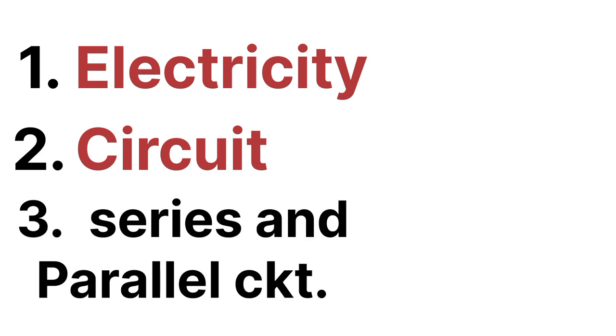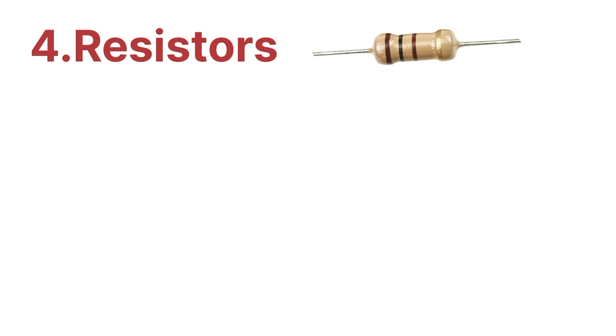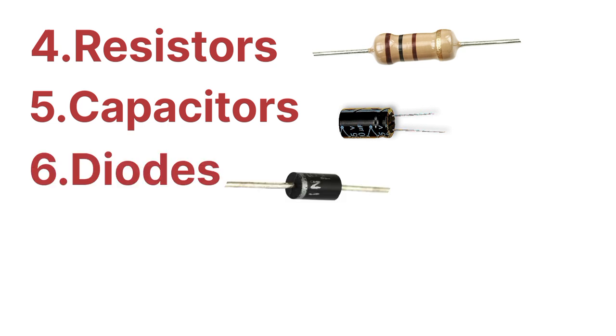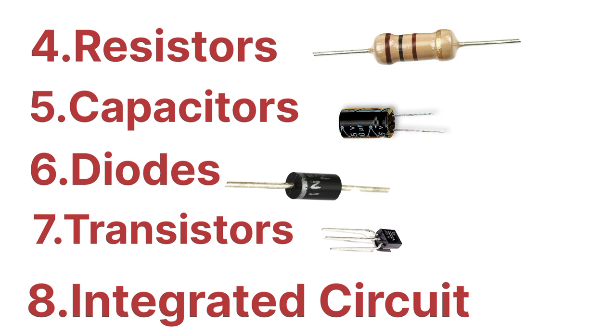The fourth one is resistors, then we'll see capacitors, then diodes and transistors, and the IC (integrated circuit). Next we will see the potentiometer.